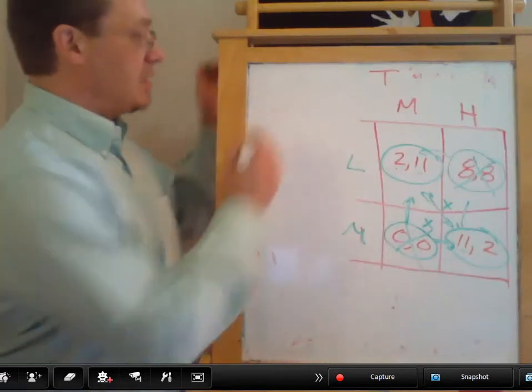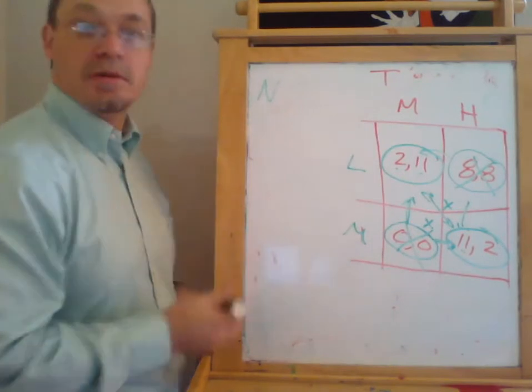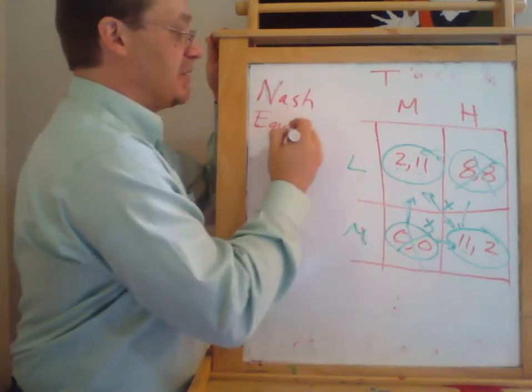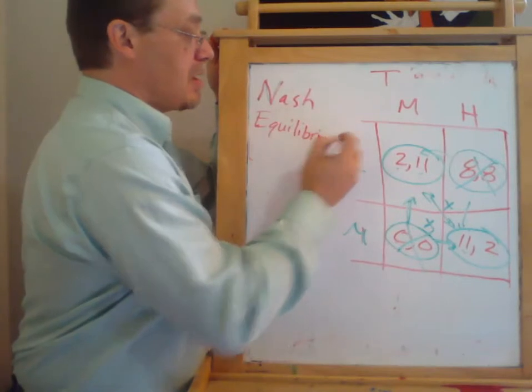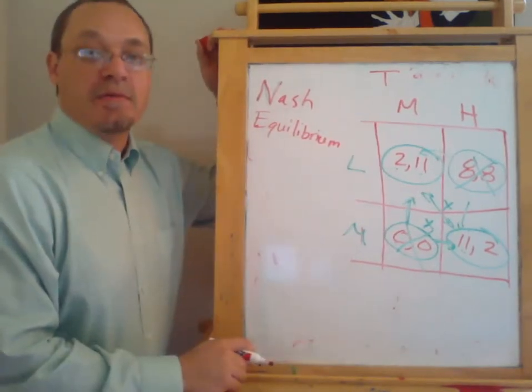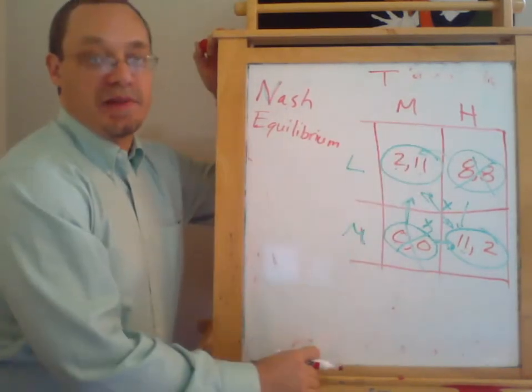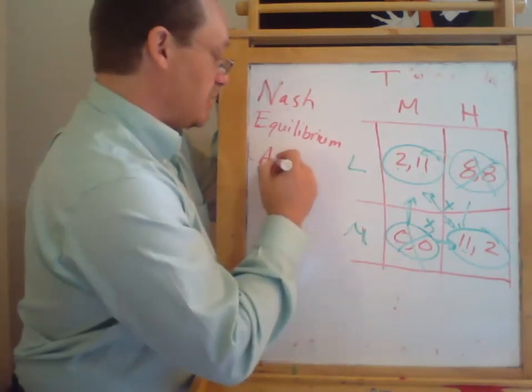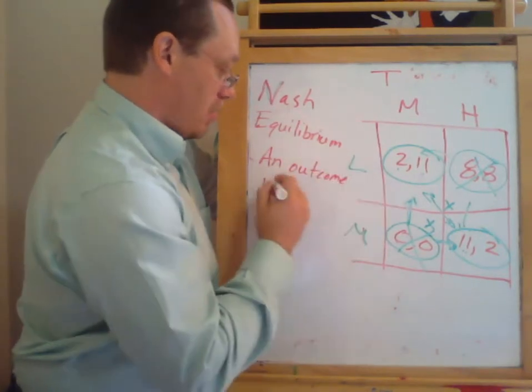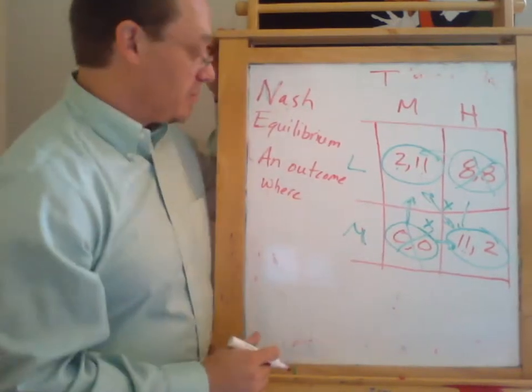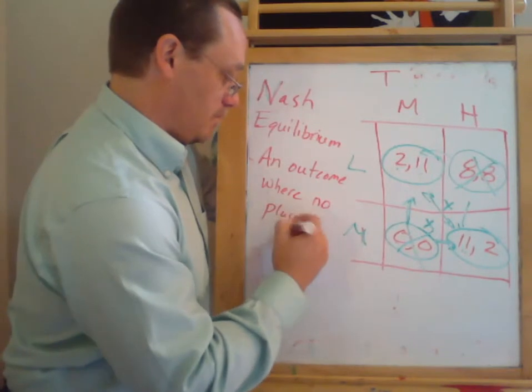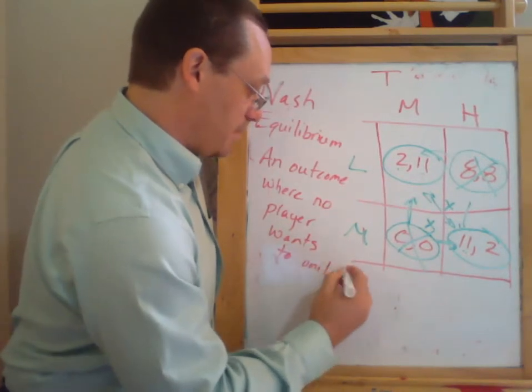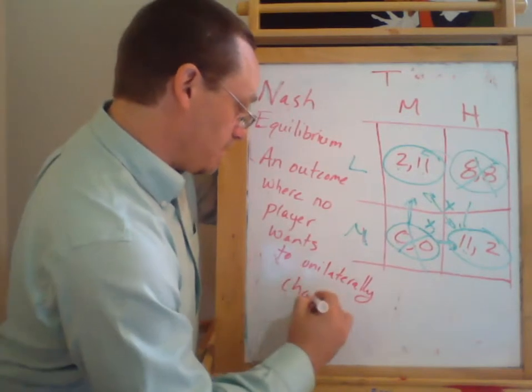So we have this game here and we want to talk about what's called a Nash Equilibrium. A Nash Equilibrium in a game refers to a result where neither player wants to unilaterally change strategies. So a Nash Equilibrium is an outcome where no player, if we have more than two players, where no player wants to unilaterally change strategy.